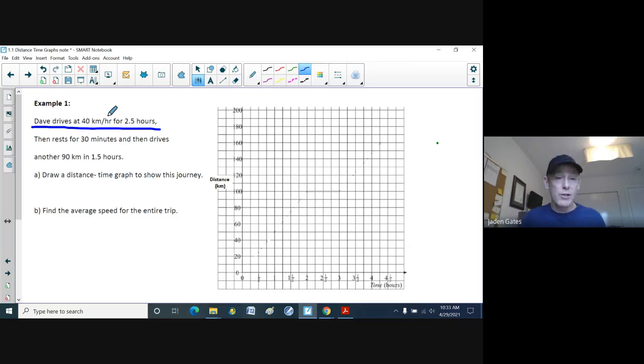Now, if you're driving 40 kilometers an hour, it means you drive 40 kilometers in one hour. So I go on my graph, and I go over to one hour, and then up to 40 kilometers. So I can draw that part. There's the first hour. But Dave does this for two and a half hours. And so I go to two hours, and I go up to not 40, but add 40 to where we were, which is 80. So he's going to drive 80 in two hours.